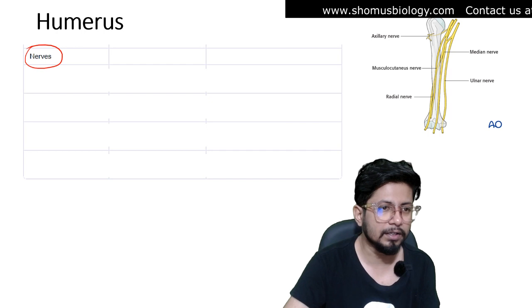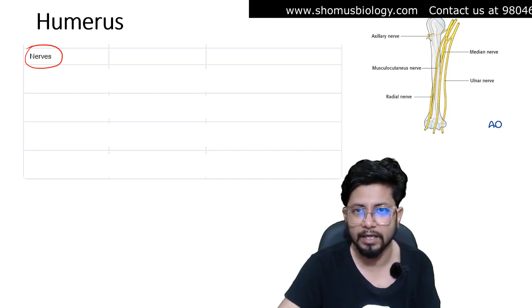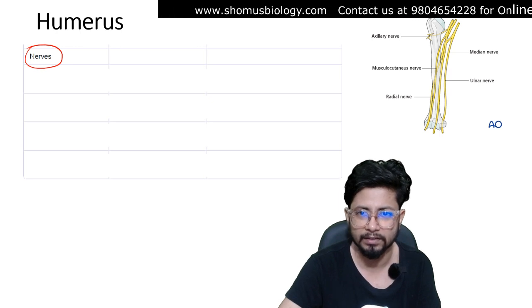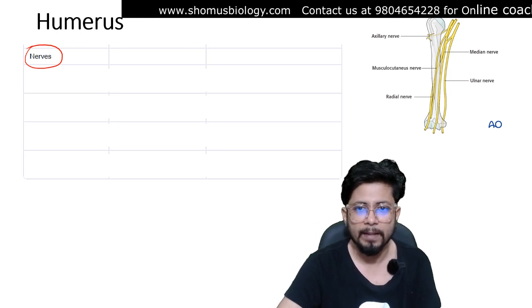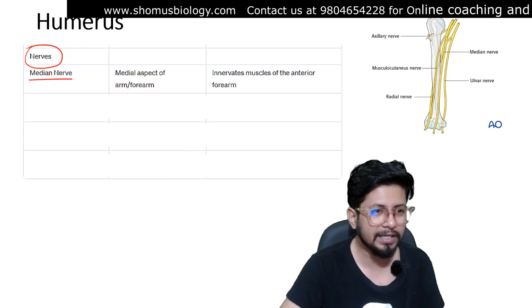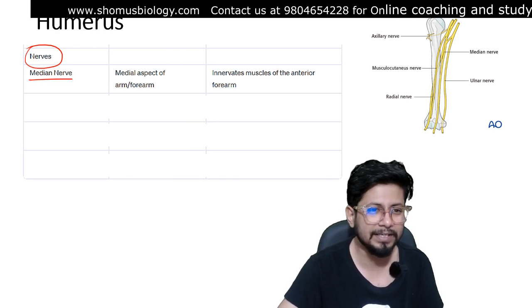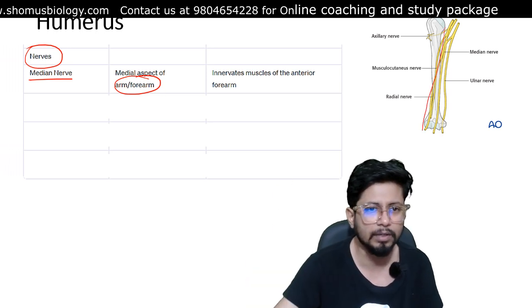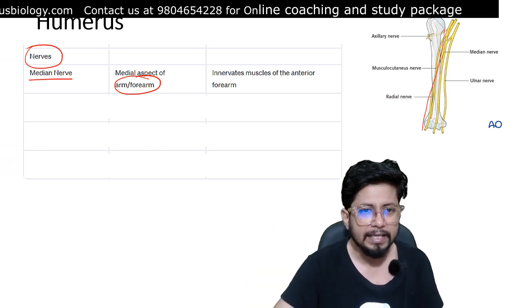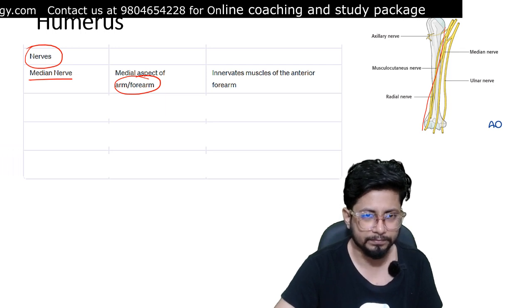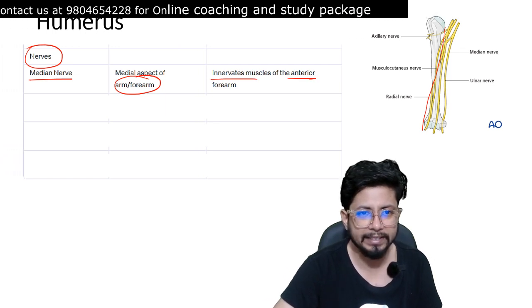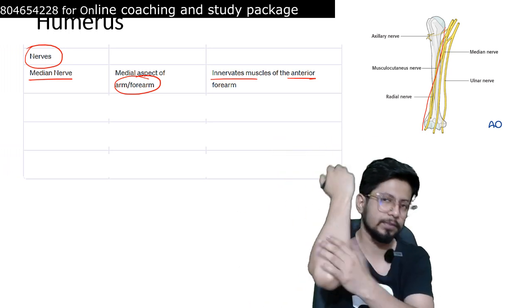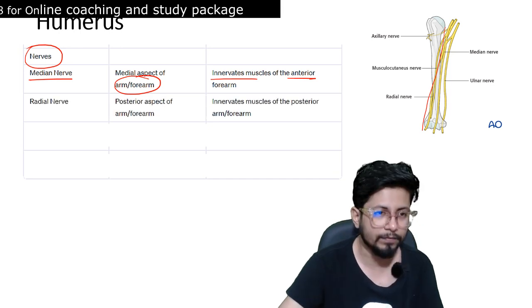The last topic is the nerves associated with the humerus. There are four key nerves: median nerve, ulnar nerve, radial nerve, and musculocutaneous nerve. The median nerve runs along the medial aspect of the arm and forearm and innervates the muscles of the anterior forearm. The radial nerve runs along the posterior aspect of the arm and innervates the muscles of the posterior arm.